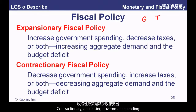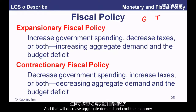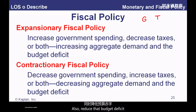Contractionary fiscal policy means decreasing government spending, boosting taxes, or both at the same time. That will decrease aggregate demand and cool the economy. It will also reduce the budget deficit.